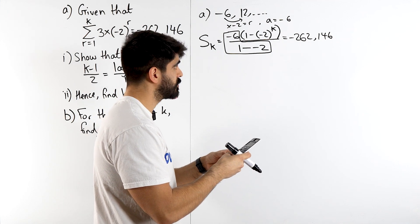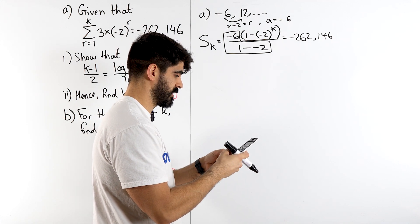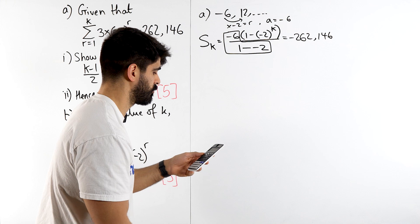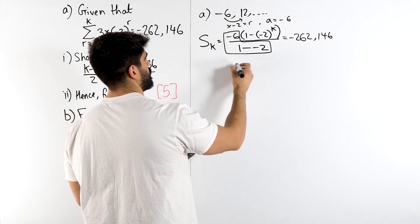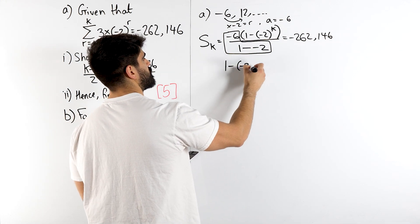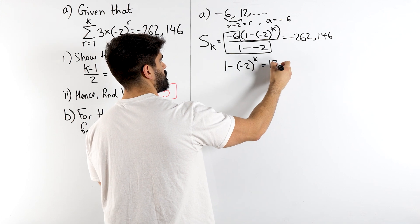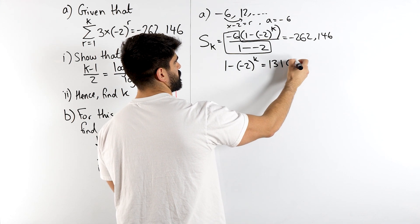Then we do minus 262,146 divided by the answer. We get 131,073. So we're left with 1 minus, minus 2 to the power of k is 131,073.